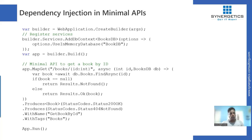For API documentation, you can still use Swagger. You can specify API response status codes, an endpoint name, and tags that will appear in the Swagger documentation.